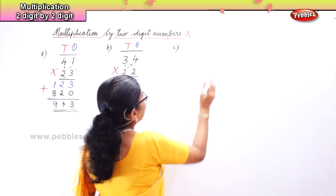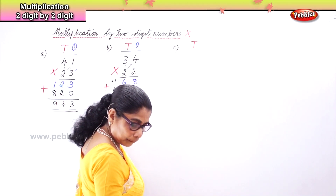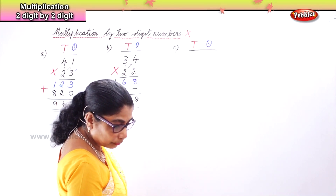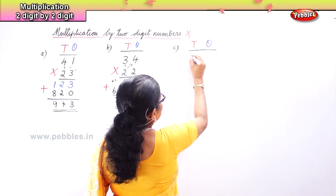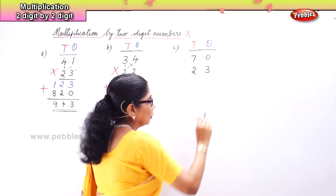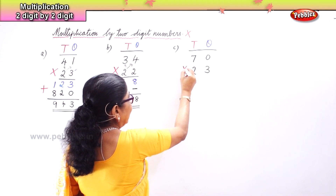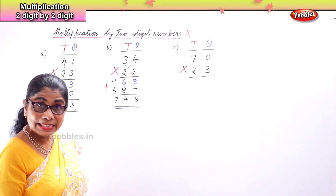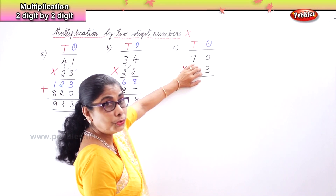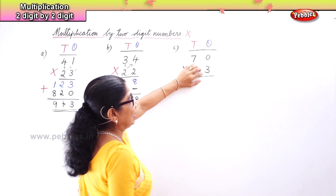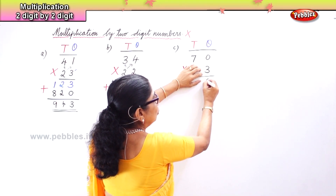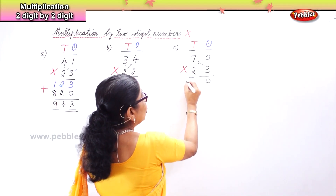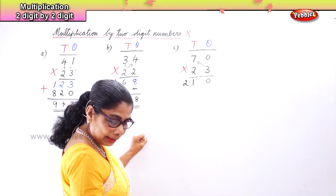Write tens and ones. The next example is 70 multiplied by 23. Forget about the 2 for now and multiply 70 by 3. Three into zero — the product is zero. Then three into seven — seven threes are twenty-one, so write 1 and carry 2.